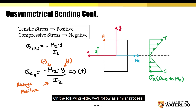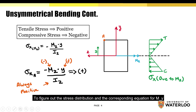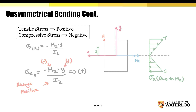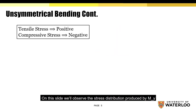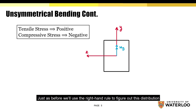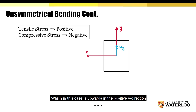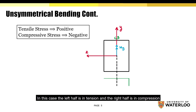On the following slide, we'll follow a similar process to figure out the stress distribution and the corresponding equation for My. On this slide, we'll observe the stress distribution produced by My. Just as before, we'll use the right-hand rule to figure out this distribution. So if you point your thumb towards the direction of the moment, which in this case is upwards in the positive y direction, notice how your fingers curl from left to right. In this case, the left half is in tension and the right half is in compression.